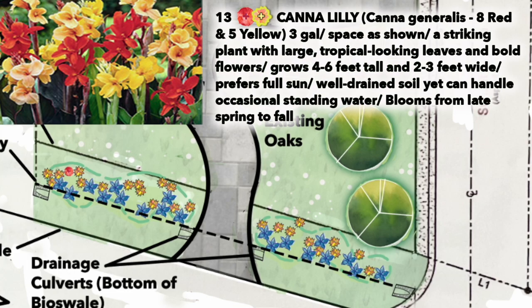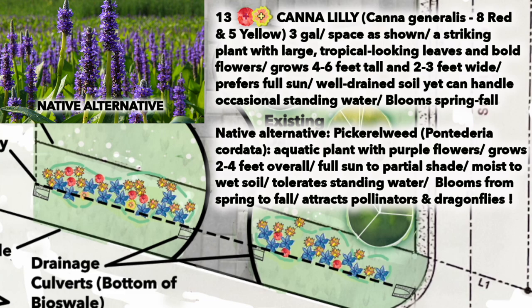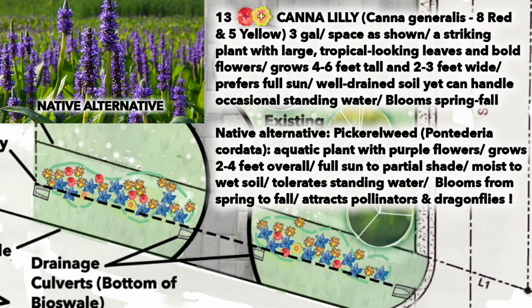Next up are the Canna Lilies. These are spectacular when they're flowering — we have 13 of them selected and we're interlacing them in and around the Apostle Iris since they like moist feet. A good native alternative is Pickerweed, with stunning purple flowers. It has a bold texture to its leaves like the Canna Lilies, and it's a beautiful, tough native plant that can actually handle standing water.